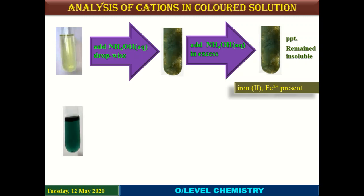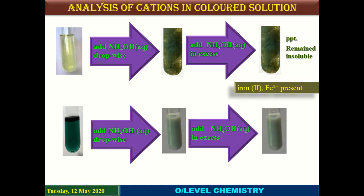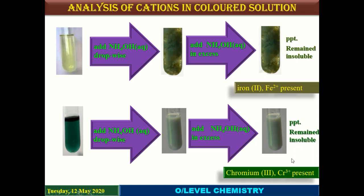If you are provided dark green coloration showing chromium 3 ions, adding ammonium hydroxide gives gray-green precipitate that remains insoluble in excess of ammonium hydroxide. This contrasts with the sodium hydroxide test, where excess NaOH dissolved the precipitate to give the same dark green coloration as the aqueous solution. In excess ammonium hydroxide, the precipitate remains insoluble. This completes our topic of identification of cations.